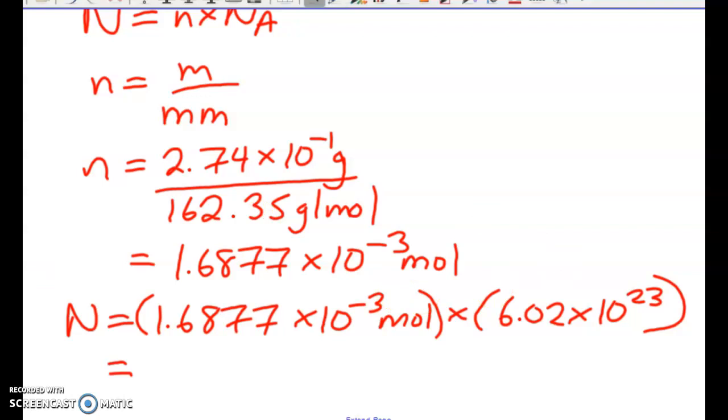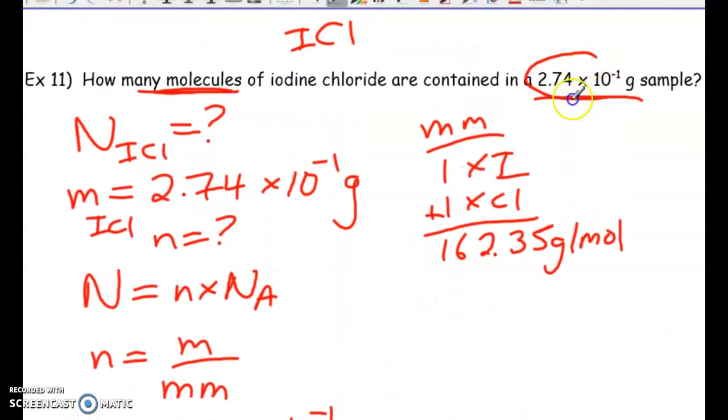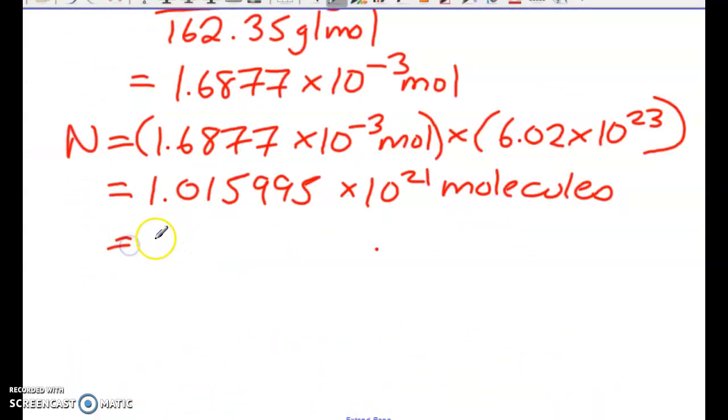Okay, so we should have here 1.015995 times 10 to the 21 molecules. But we know we're going to have to round this. So our number up here has 3 sig figs. So down here, we'll have to round this to 3 sig figs. So this is going to be 1.02 times 10 to the 21 molecules.